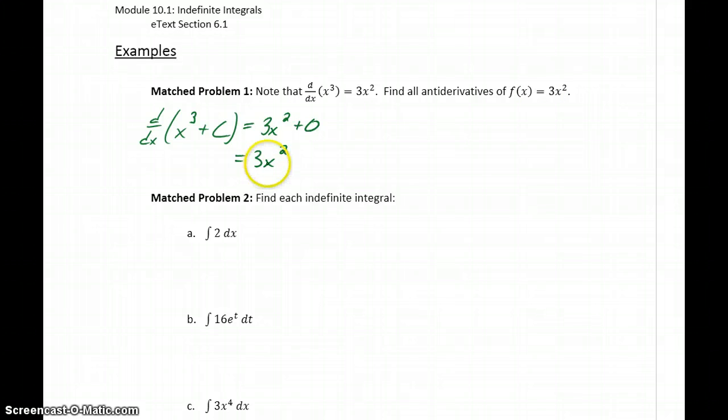Anti-derivatives are all about working these problems backwards. So if we're starting with 3x squared, that means our anti-derivative is this family of functions x cubed plus c. So to represent all anti-derivatives of f of x, we would say x cubed plus c is our function capital F of x, or the anti-derivative function, the family of all anti-derivative functions for 3x squared.